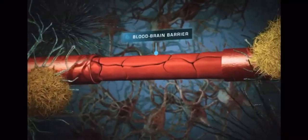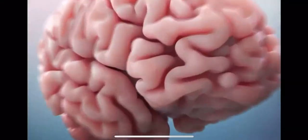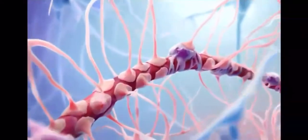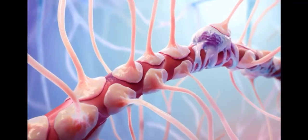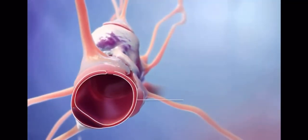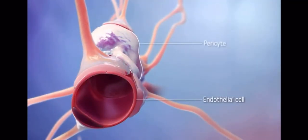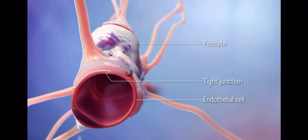Scientists have recently discovered new methods of delivering medication through the blood-brain barrier. The blood-brain barrier is composed of endothelial cells, pericytes, tight junctions, and astrocytic endfeet.